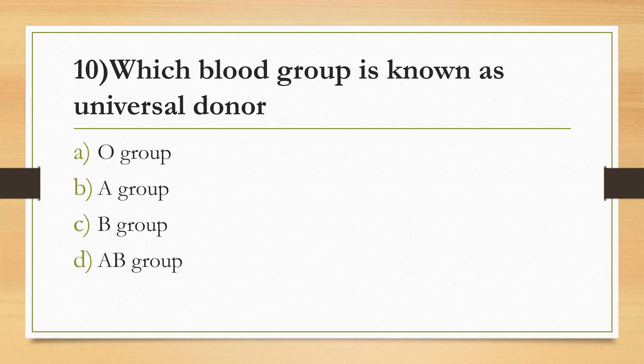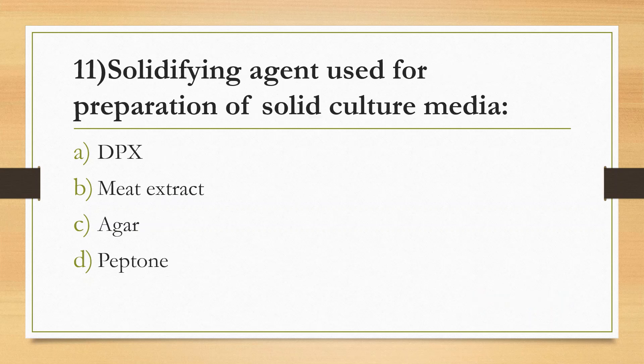Tenth Question: Universal donor blood group — Option A: O Group, Option B: A Group, Option C: B Group, Option D: AB Group. Answer is Option A: O Group. The universal recipient is AB positive. The universal donor is O negative blood group.